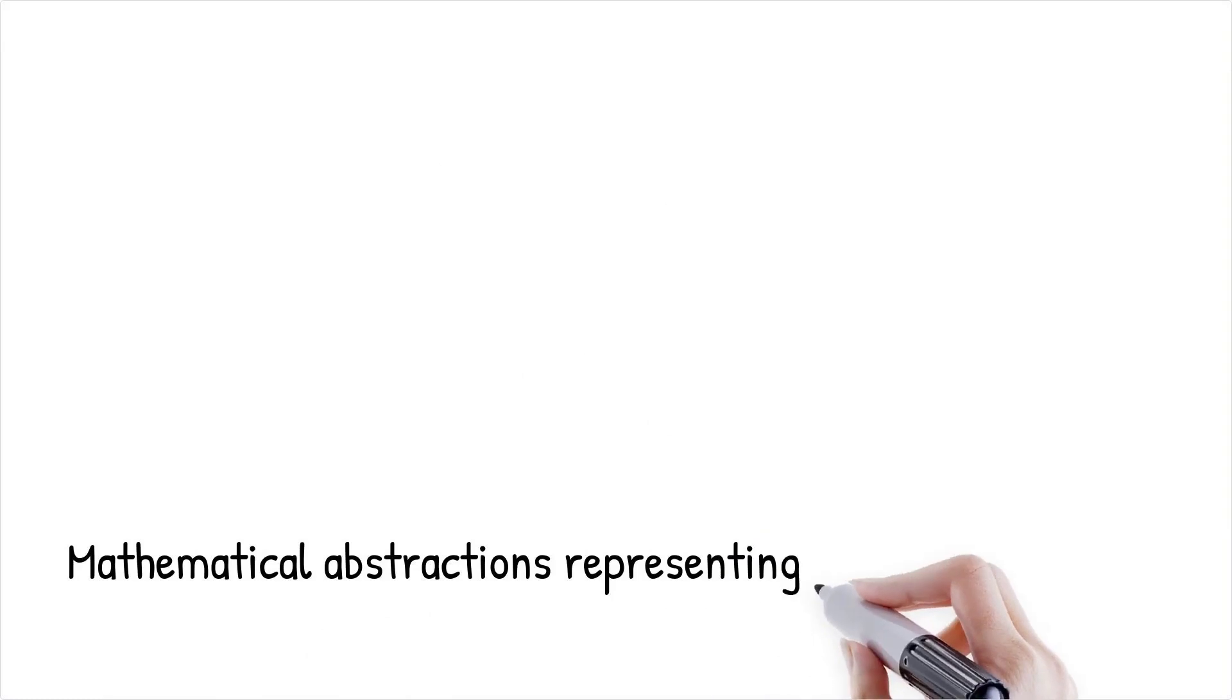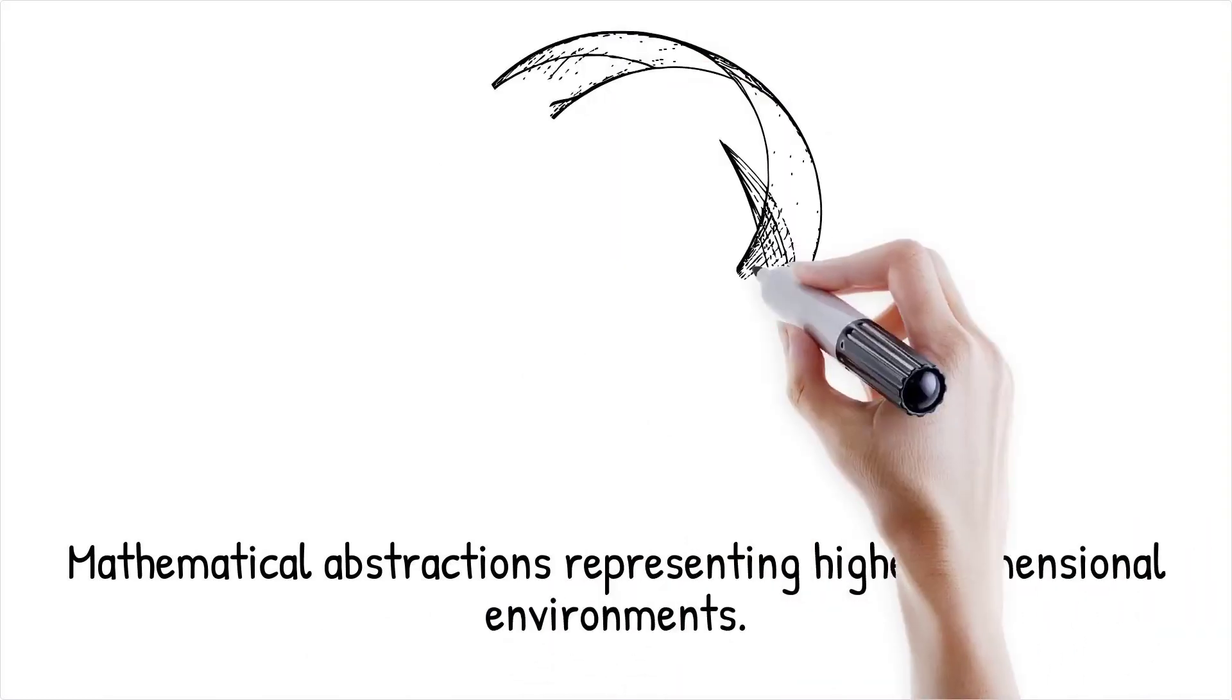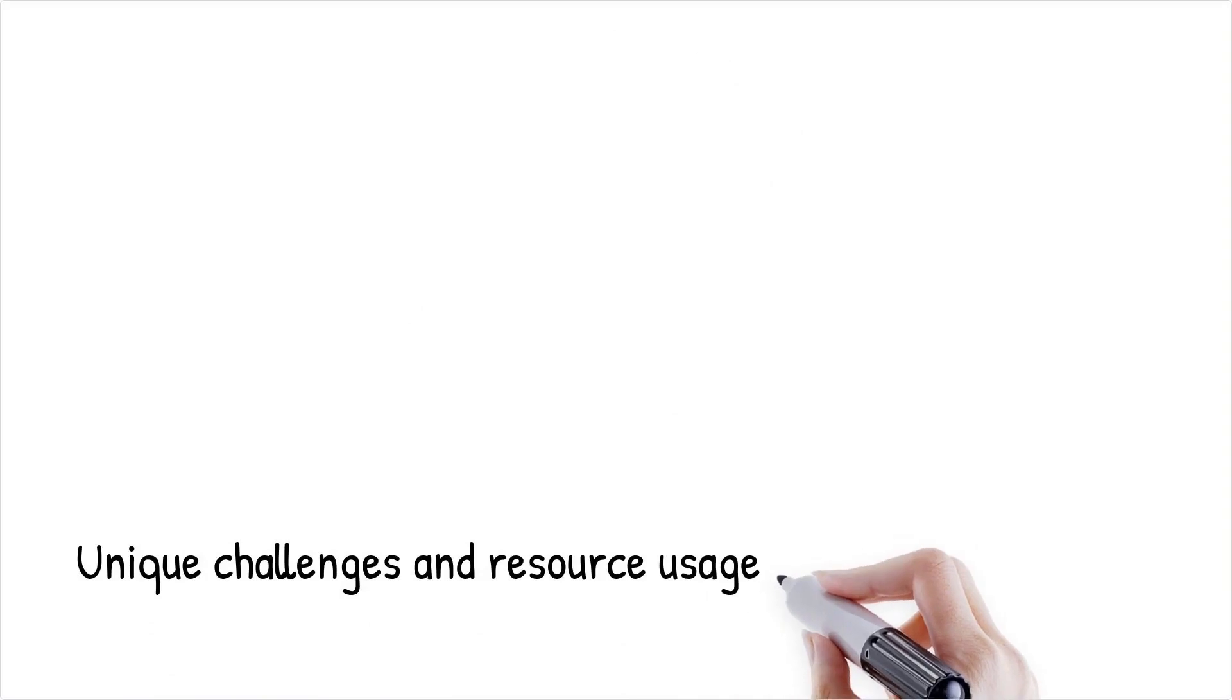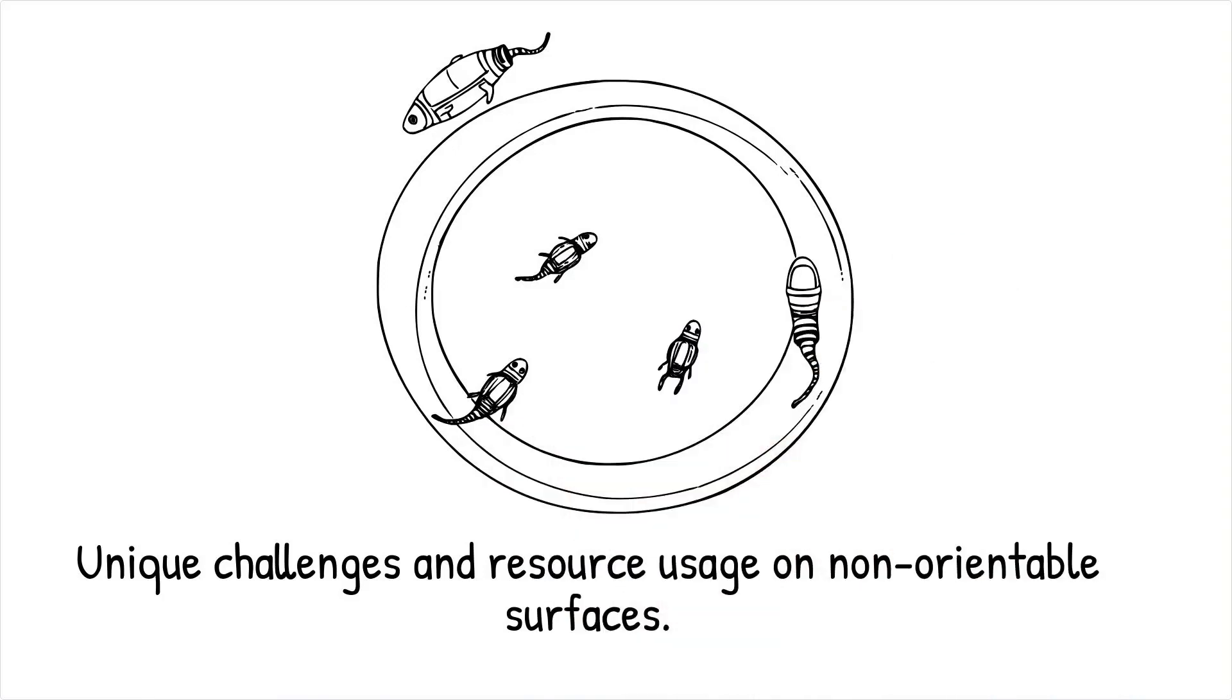Topologically, they exist as mathematical abstractions, but could represent actual physical environments in higher dimensional or string theoretical contexts. The absence of distinct boundaries challenges the evolutionary development of territoriality, shelter, and mating behaviors. Life forms might exploit the unique resource distributions or pathways that such surfaces create, potentially utilizing every inch of their environment due to its non-orientable nature.